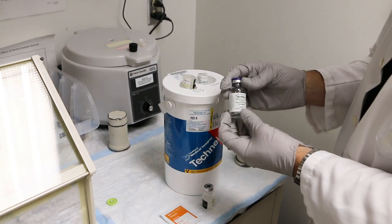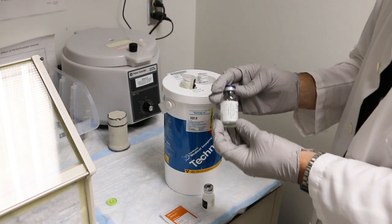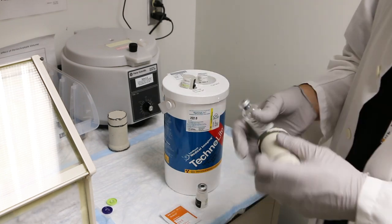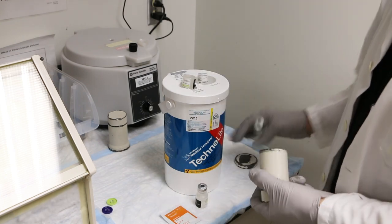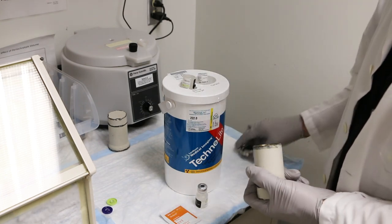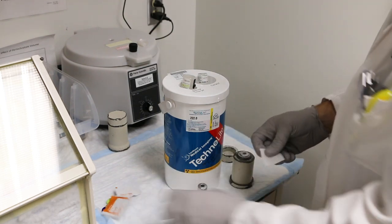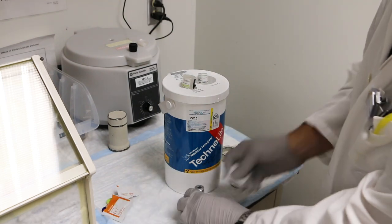The collection vial will have enough vacuum to pull all the saline through the generator. As the collection vial will be radioactive at the end of the elution process, it is placed in a lead shield prior to elution. Swab the tops of the saline and collection vials to ensure they are sterile.